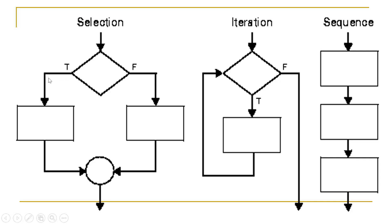In conditional control, we have the IF statement where we perform some selection based on a condition. If the condition is true we perform a group of statements, and if false we perform another group. In iteration control, we perform a group of statements in a loop until the condition becomes false, then we exit. In sequential control, we perform statements in sequence or can skip some block of statements.